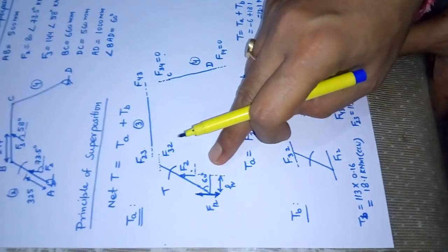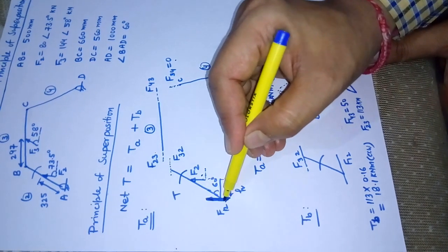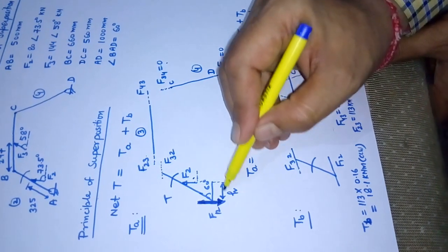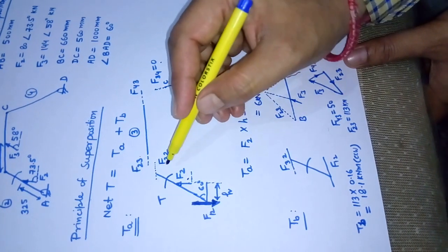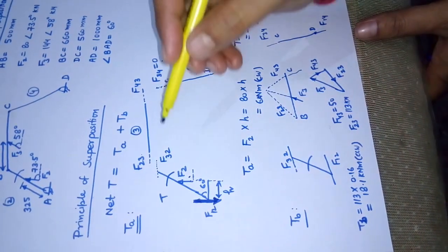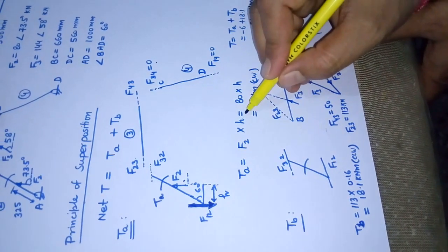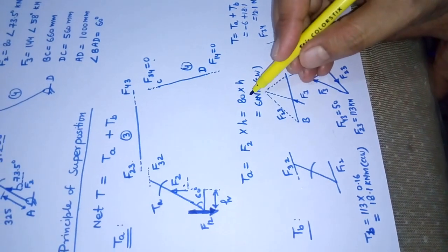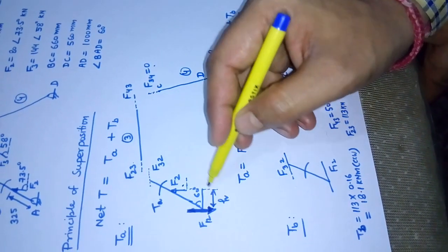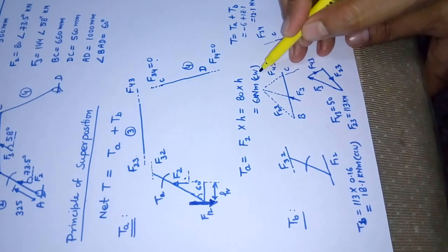To analyze link number two, with F2 present, F12 is going to be equal, parallel, and opposite to F2, forming a couple. We extend the lines of action, drop a perpendicular, and get the perpendicular distance h. Then torque T equals F2 multiplied by h. The value of Ta for this part is F2 into h, which calculates to 6 kN·m. Looking at the direction of rotation of the couple, it is clockwise, so Ta = 6 kN·m clockwise.